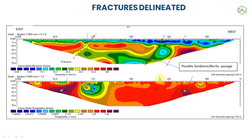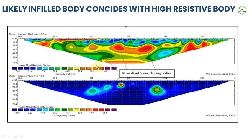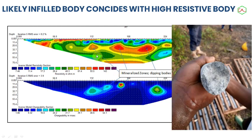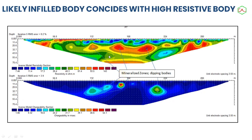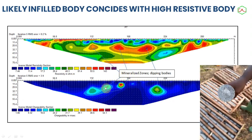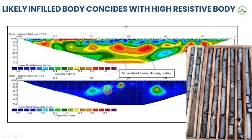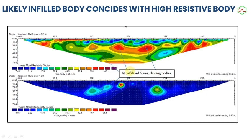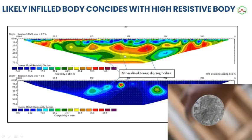Looking at another result — another section here — this is a likely conductive body coinciding with a resistive body. This is also a place that has been drilled, so we'll be able to see what we got from this location. From coring, we got some reasonable results which will show you what was obtained. You can see this is actually very well fitted — there is no noise here; this is a very clear indication of an anomaly coinciding with a high-resistivity body in this location.